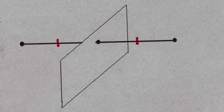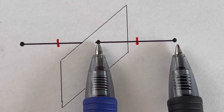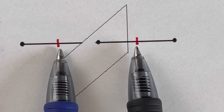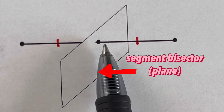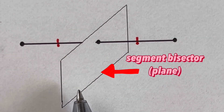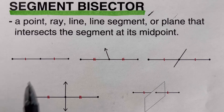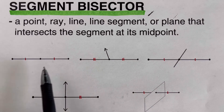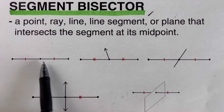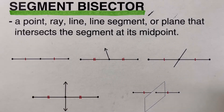In this picture, the line segment was cut into two congruent pieces, as shown by the tick marks, and it was cut by a plane. A plane cuts this segment into two equal pieces at its midpoint, so the plane here is the segment bisector. To summarize, a point, ray, line segment, line, or plane can all be segment bisectors — each intersecting the line segment at its midpoint.